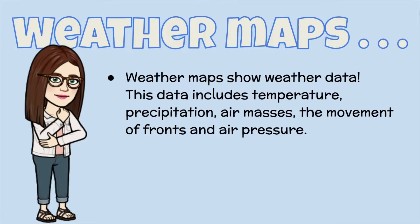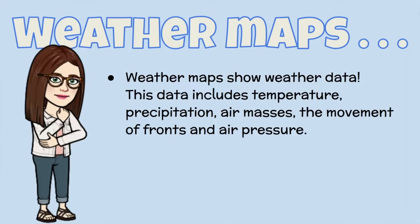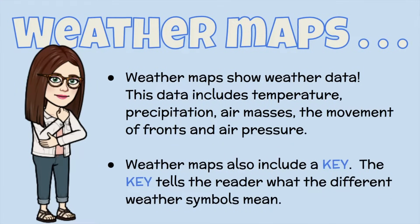Weather maps show weather data. This data includes temperature, precipitation, air masses, the movement of fronts, and air pressure. Weather maps also include a key. The key tells the reader what the different weather symbols mean.